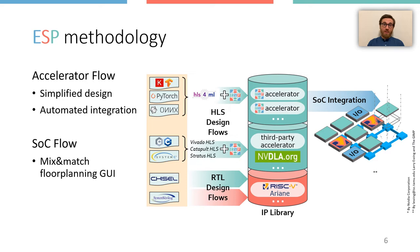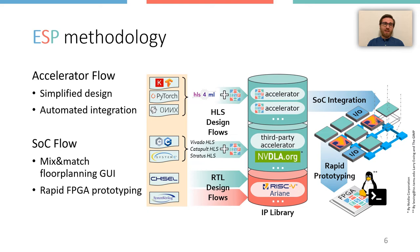Once the floor planning is specified, the flow for FPGA prototyping is push-button. ESP generates the RTL for the full system, which can then be deployed on FPGA, where it can run Linux.